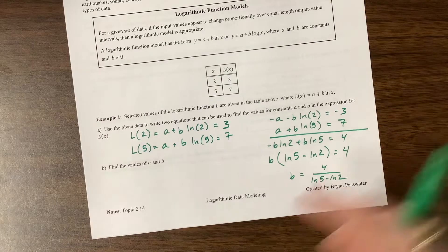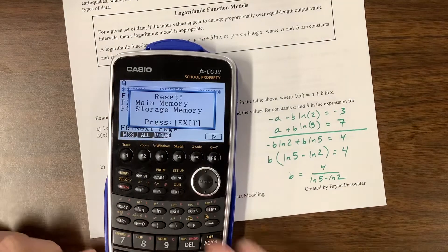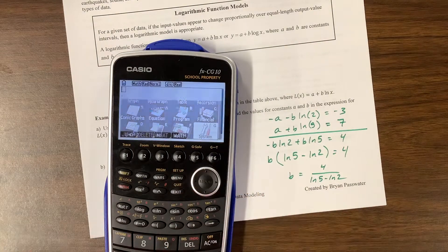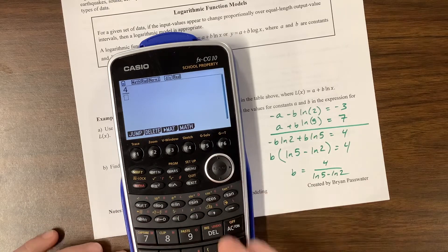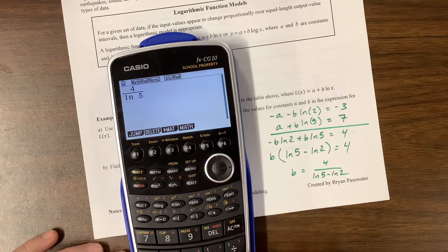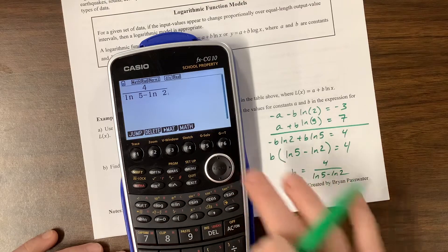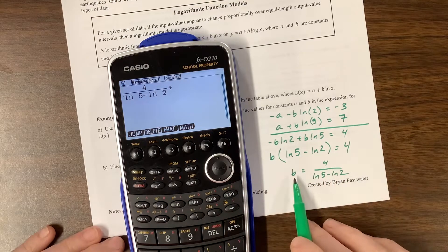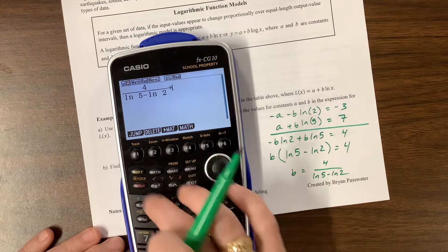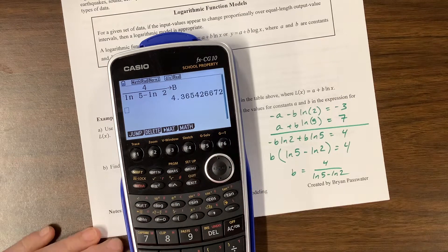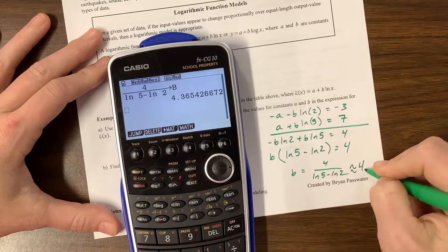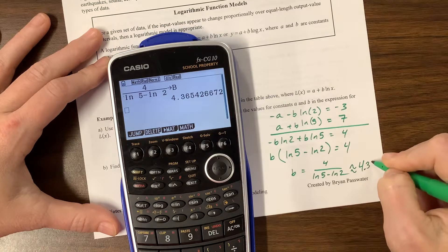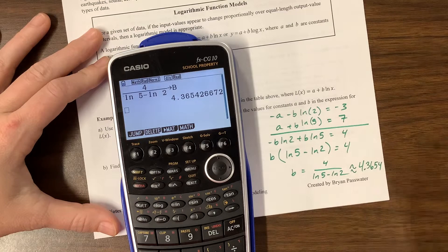This is exact and at this point we're ready to grab our calculator. I can come to my calculator and take this value, it's 4 over the natural log of 5 minus the natural log of 2, and I can store this value as B so that I have it for when I need it. This is approximately equal to, I'm going to practice writing 4 decimal places, 4.3654.